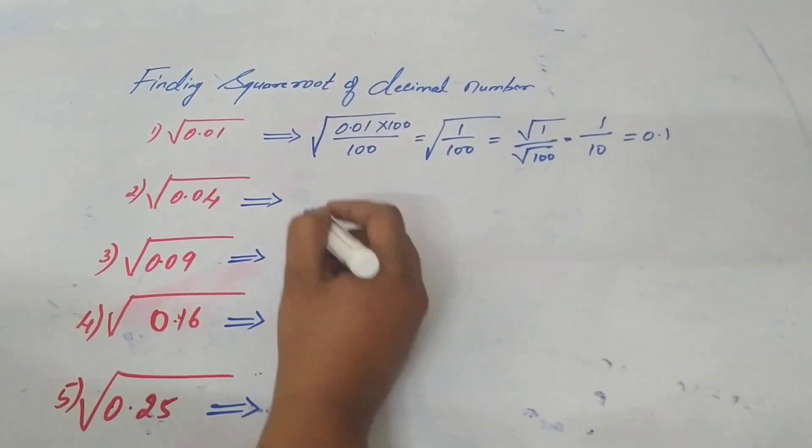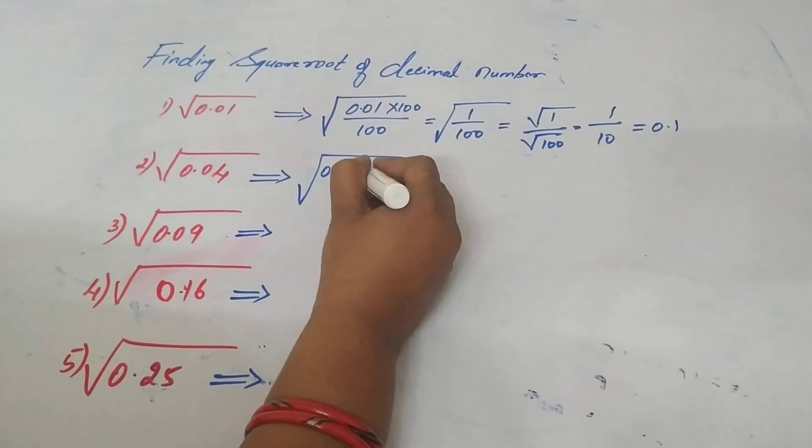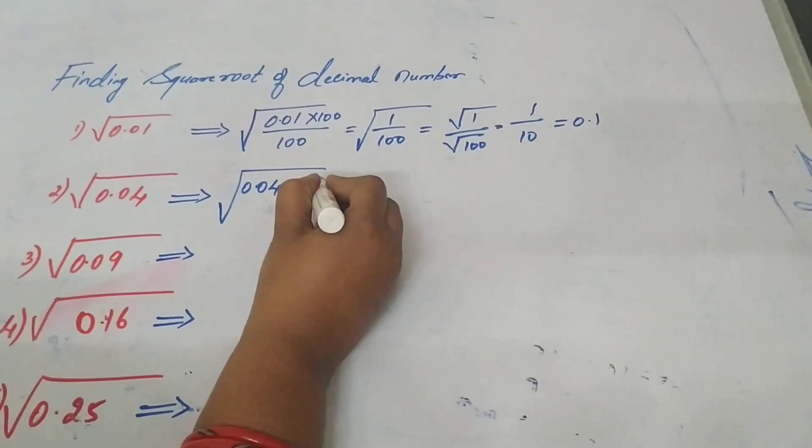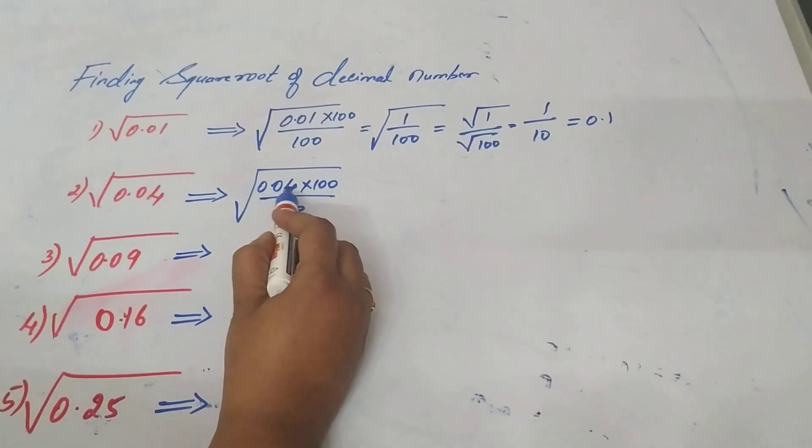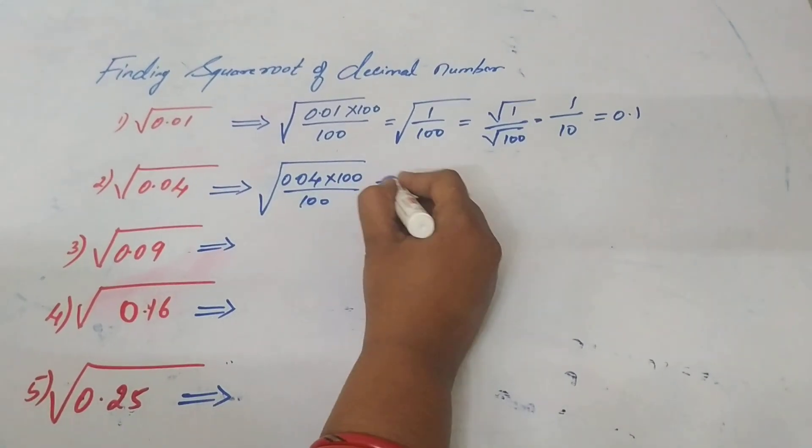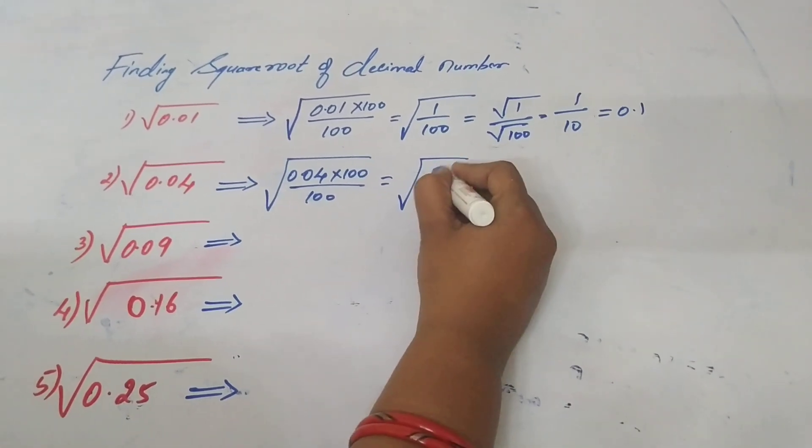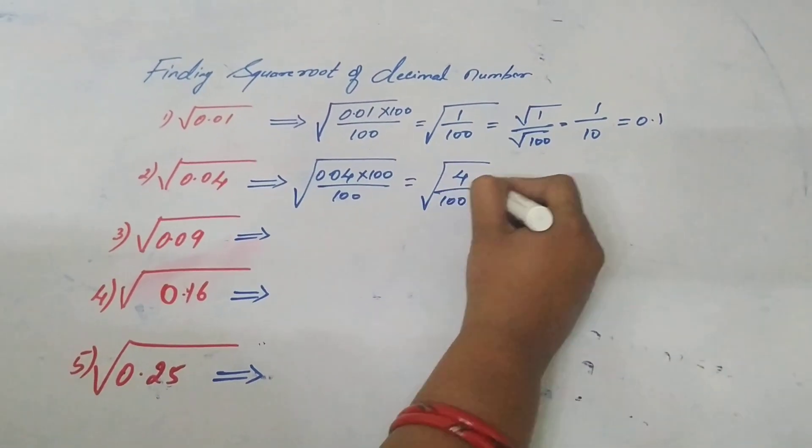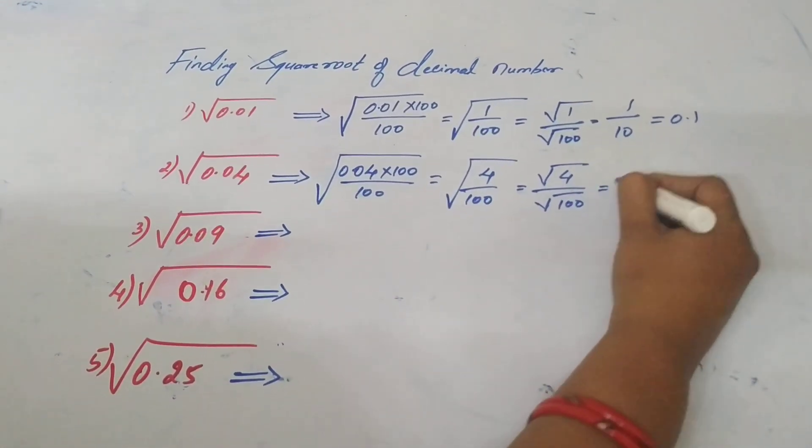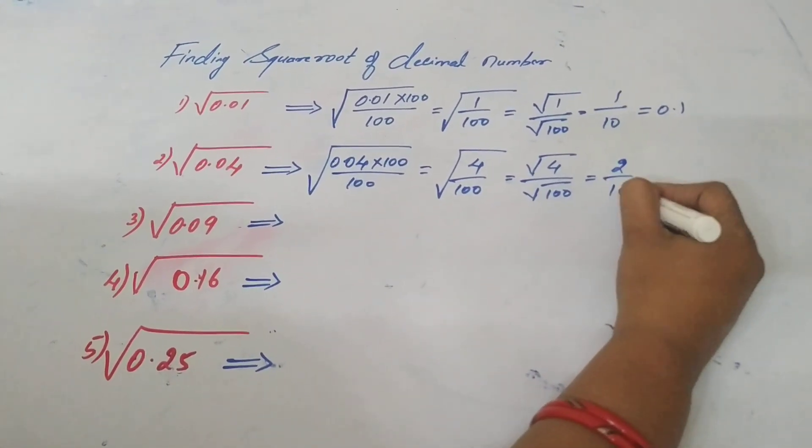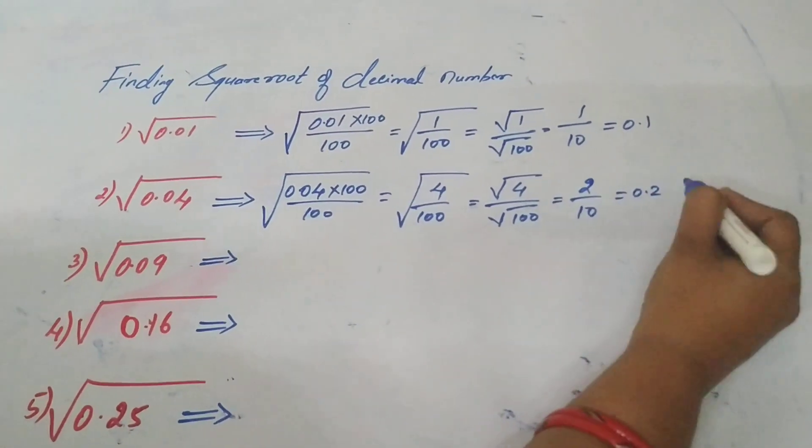The same way, square root 0.04 into 100. We are multiplying 100 to shift this decimal. So it is again under root 4 by 100, which is equal to root 4 by root 100, which is equal to 2 by 10, 0.2.